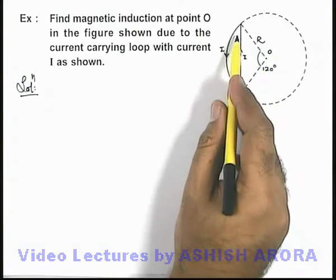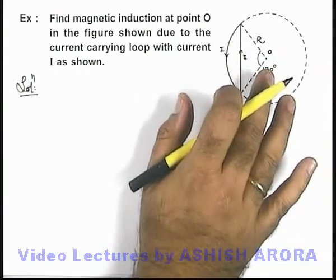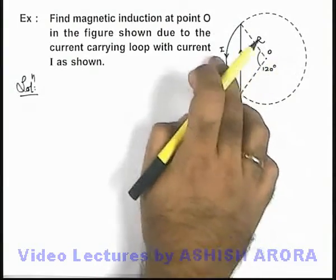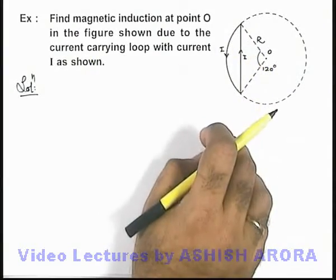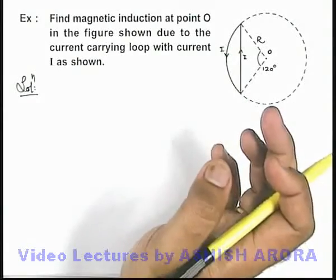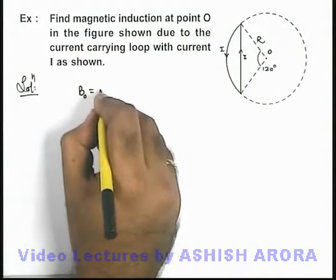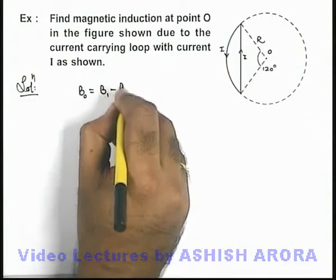We can see due to the straight wire, if it is B1, then it will be in downward direction. And due to this circular arc, current is flowing in downward direction, so magnetic field at point O is in upward direction. Both are opposite, so we can write magnetic field induction at O will be B1 minus B2.